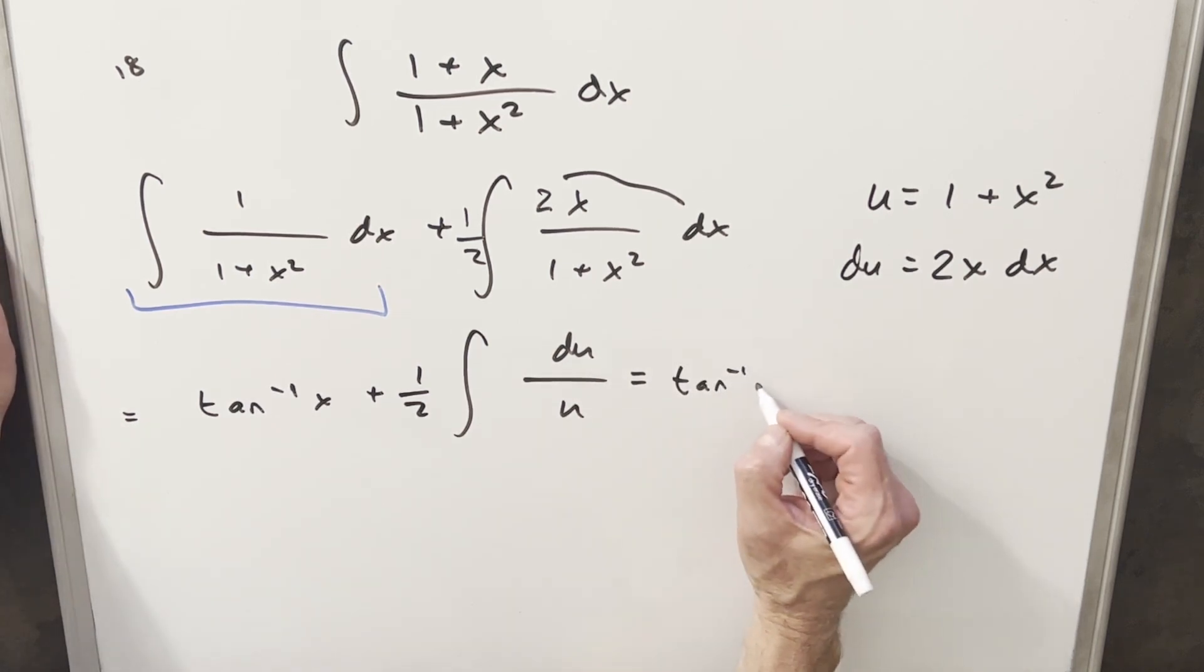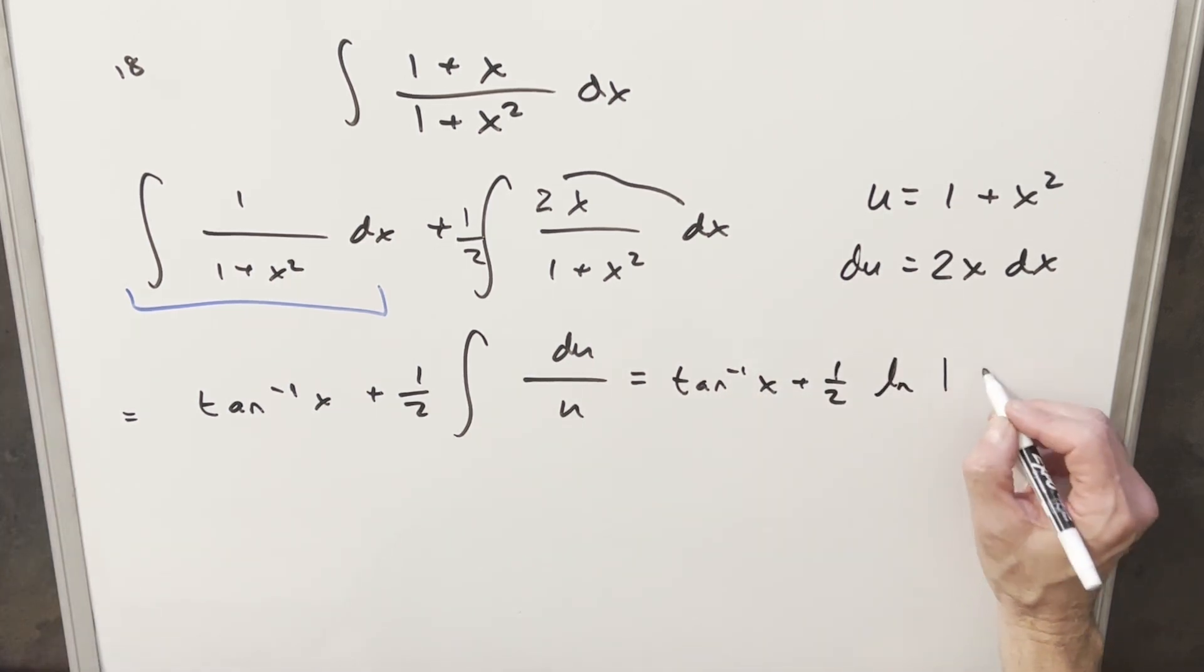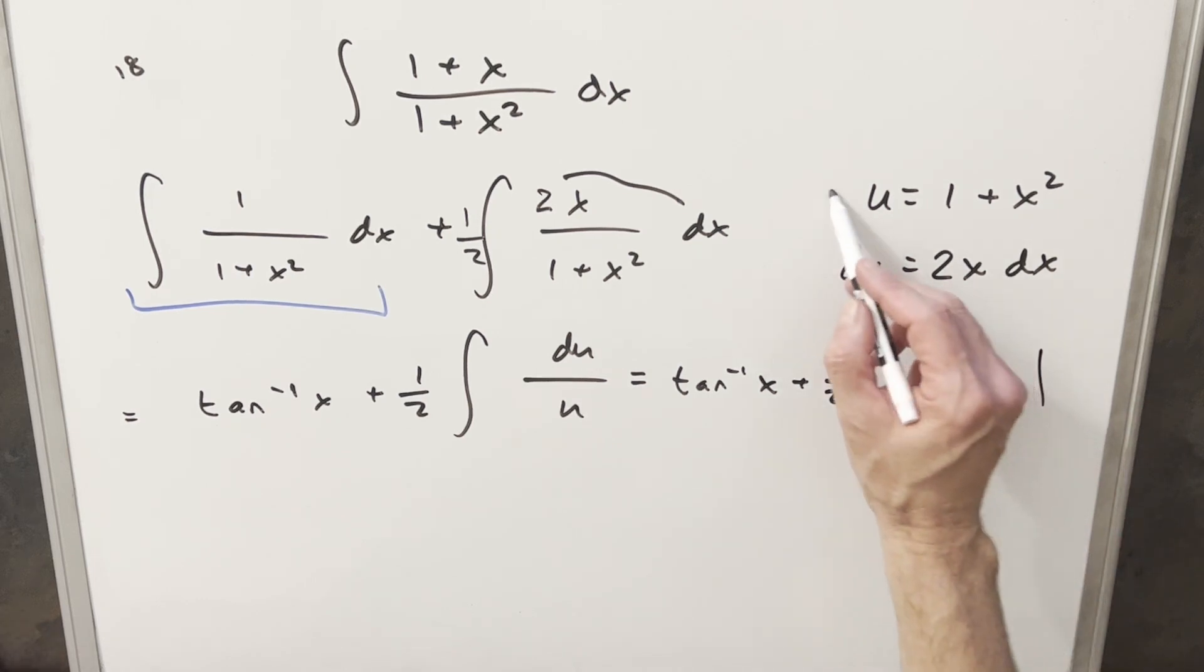Let me just copy everything over. So we have our arctan of x, 1 half. The integral of this is going to be just natural log absolute value of u. All I need to do here is just back-substitute in order to finish it off.